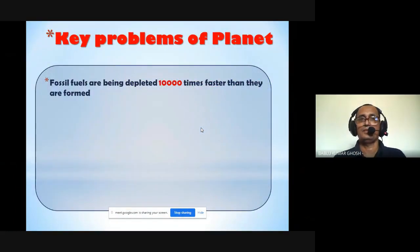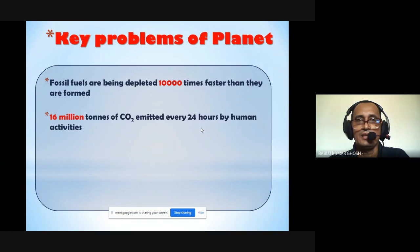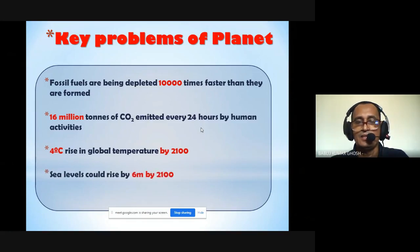What is the necessity of solar photovoltaic? The key problem of the planet is fossil fuel - that energy source is depleting very fast with respect to its generation. Due to fossil fuel use, carbon dioxide levels are tremendously increasing in the environment, about 16 million tons per 24 hours. Due to this carbon dioxide, global temperature may rise even four degrees Celsius by 2100, and sea level may also rise significantly.